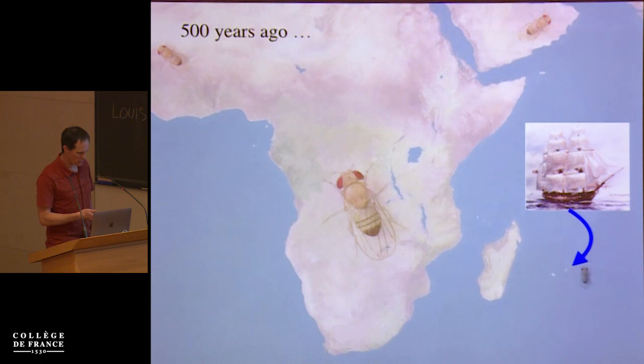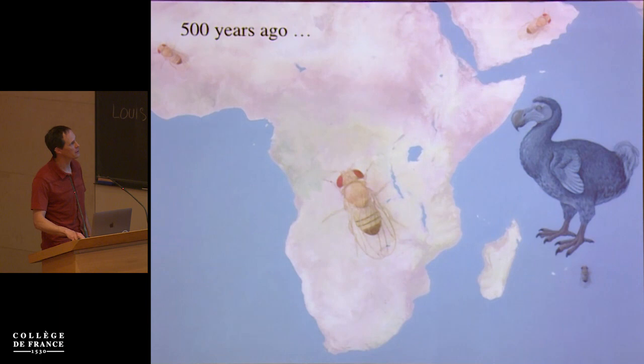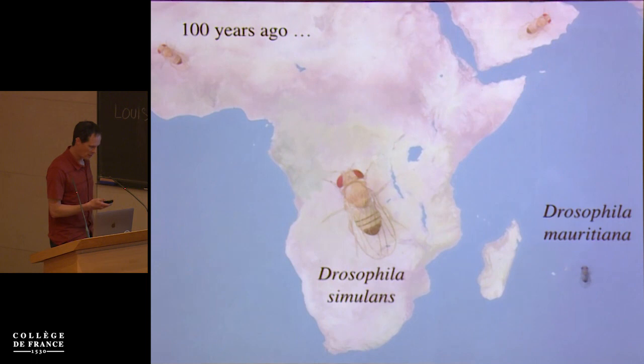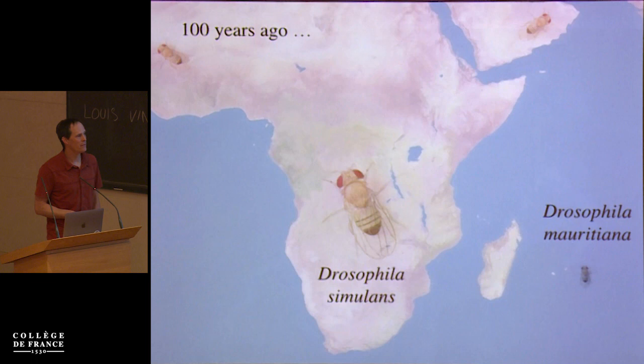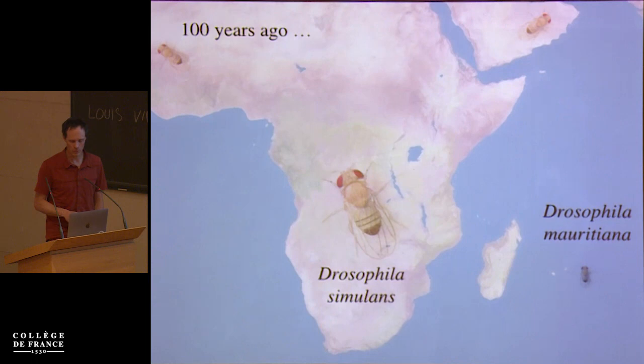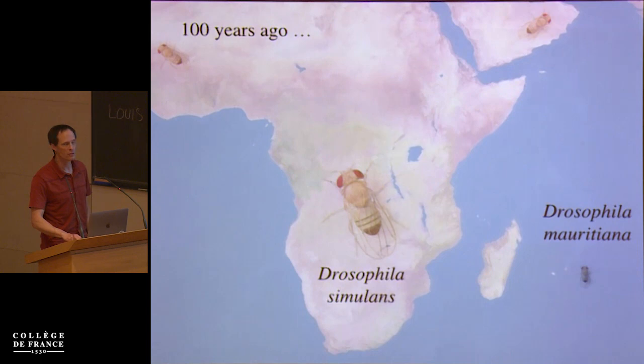About 500 years ago, Dutch sailors got to the island of Mauritius, where they too encountered *Raphus cucullatus*, and drove it extinct largely by eating it. And then 100 years ago, Alfred Sturtevant named this species *Drosophila simulans*. And then, the year I was born, Jean David discovered this species and named it *Drosophila mauritiana*. So these are the two species I work with as a system for understanding speciation.